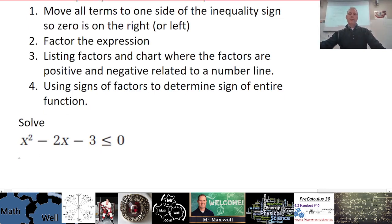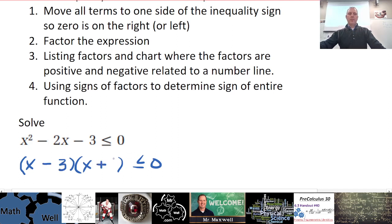Step one is already done. Step two is to factor the expression. It's a trinomial, so I expect to factor it as two binomials. x should be the first term, and it looks like we have negative three and positive one — because negative three times positive one is negative three, and negative three plus one is negative two. So that should give us the factored form.